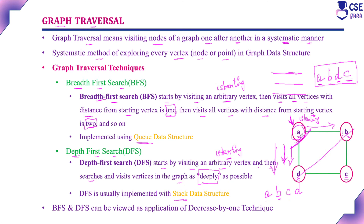Backtracking from D, we return to check each vertex for any remaining unvisited nodes. From vertex B, all vertices are visited. From C, all visited. From D, all visited. The algorithm completes. So for BFS the order is A, B, D, C, and for DFS the order is A, B, C, D. That is the difference in visiting order between the two traversals.